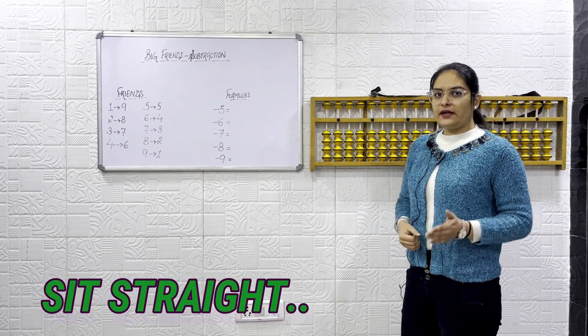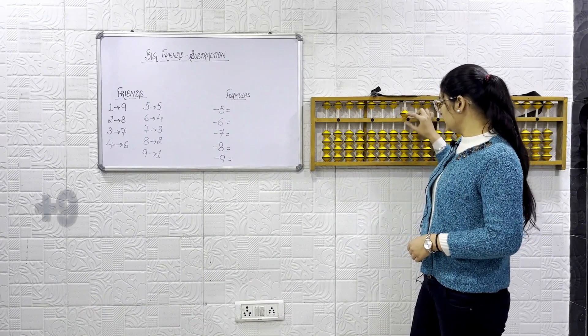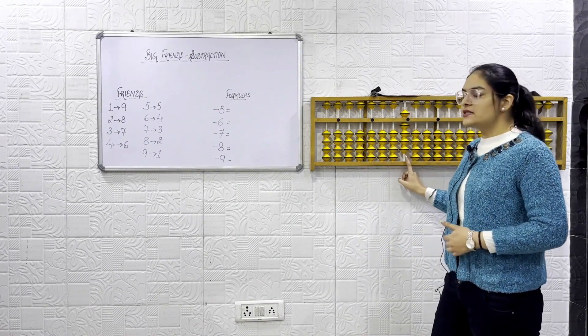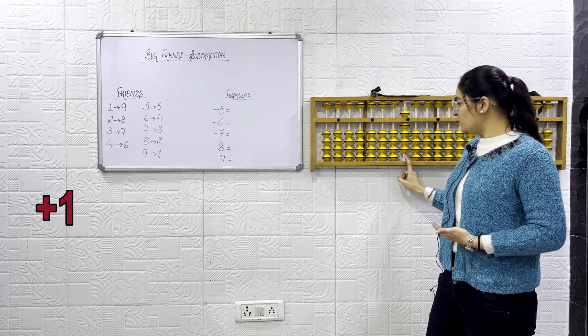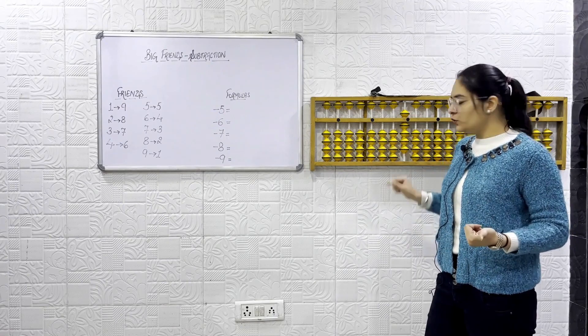You have to sit straight and you have to do the song along with me. Plus 9. You have to speak the number first and then do it. Now, plus 1. In this we have to do plus 1. What method will you use?